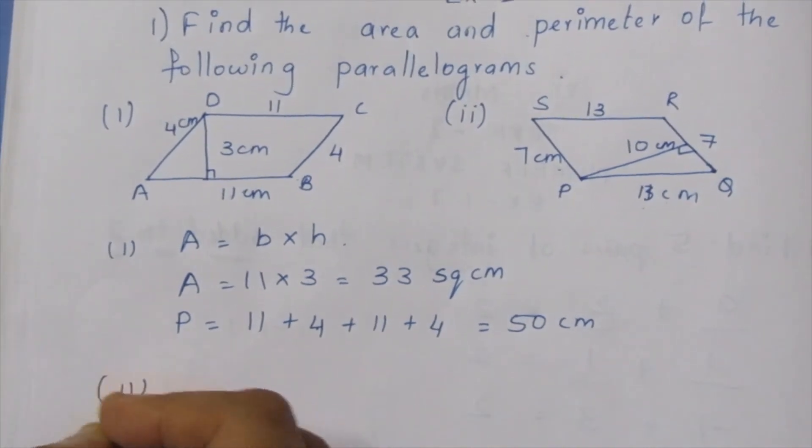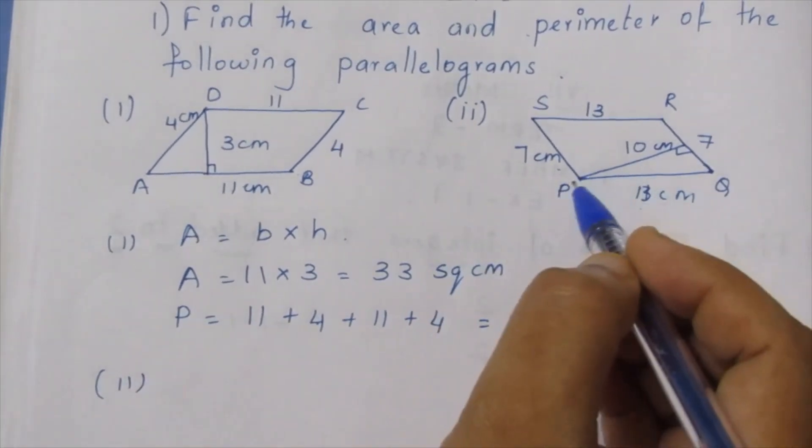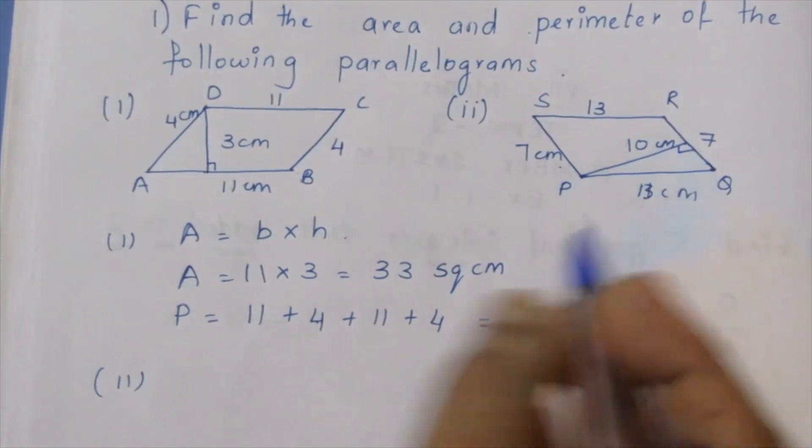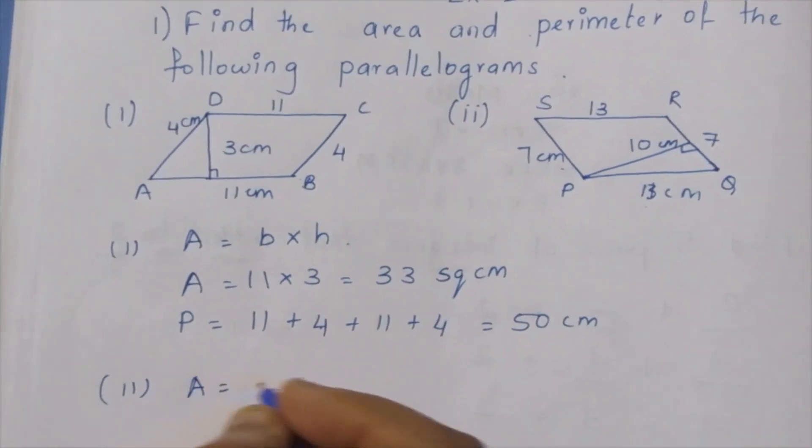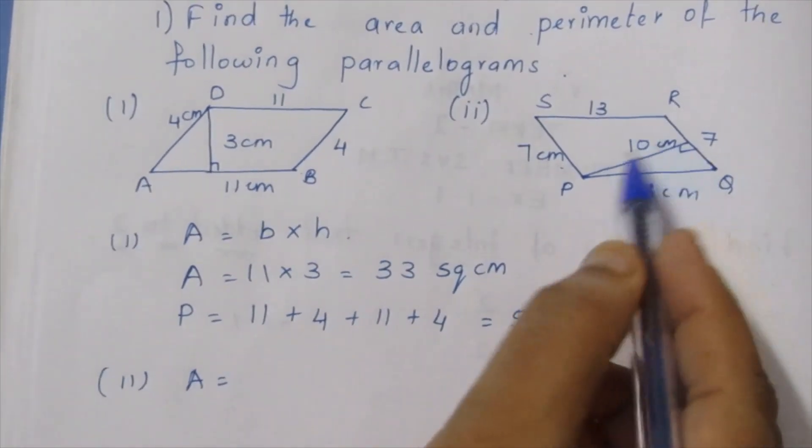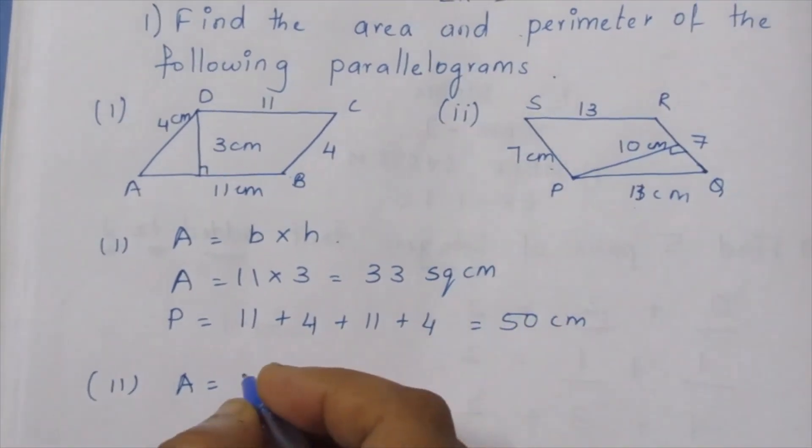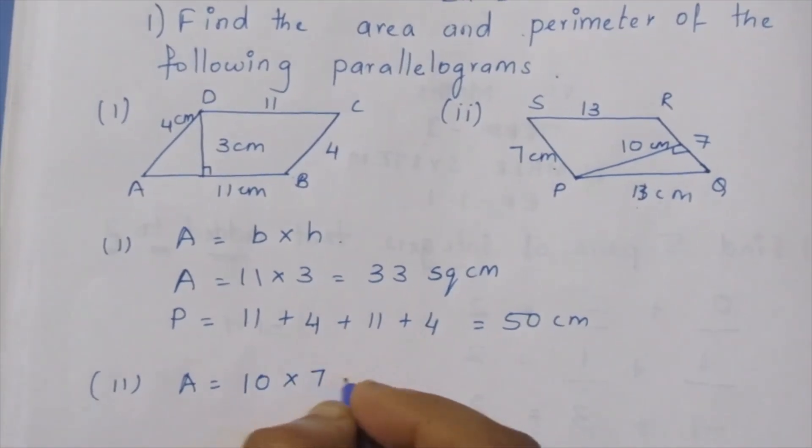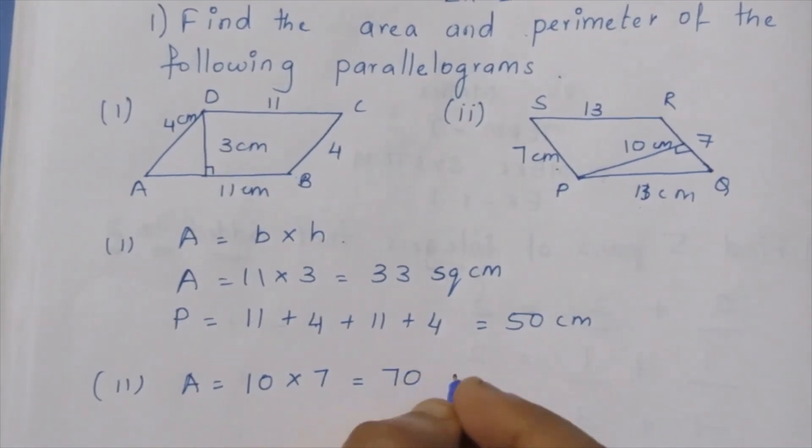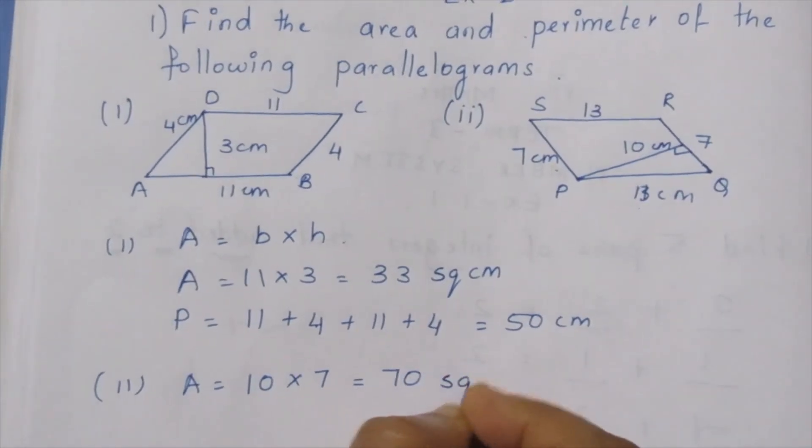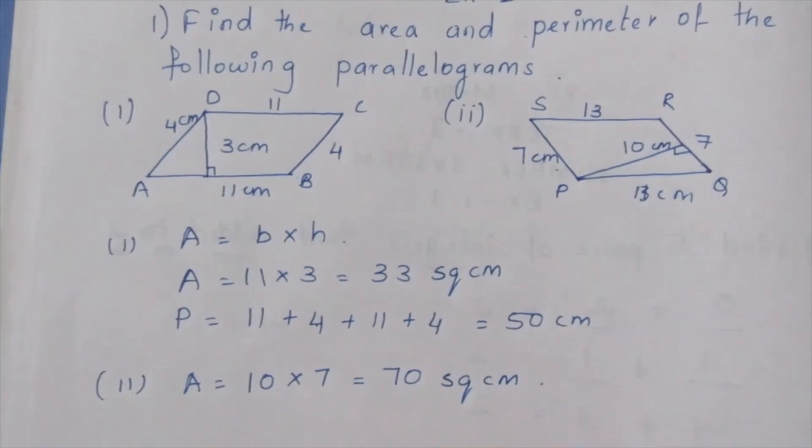Second sum: base into height. This is height. Area equal to this base and height, here this is base: 10 into 7, that is 70 square centimeter or centimeter square.